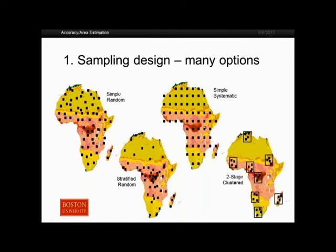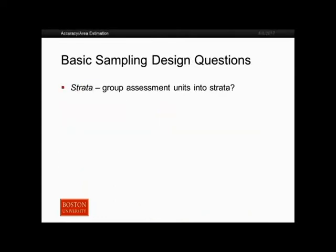We can also do a more complicated cluster-based sample or two-stage cluster sample, where we first select primary sampling units and then sample within those primary units. One obvious benefit is that if we want to collect reference data such as high-resolution imagery, we only need to do that over these primary sampling units. There are some drawbacks — I'll refer you to the literature if you're more interested.